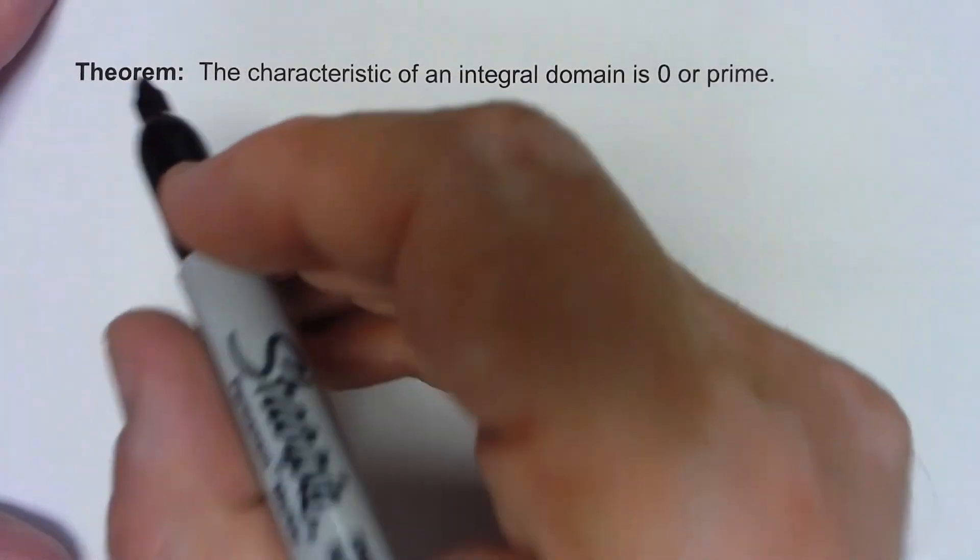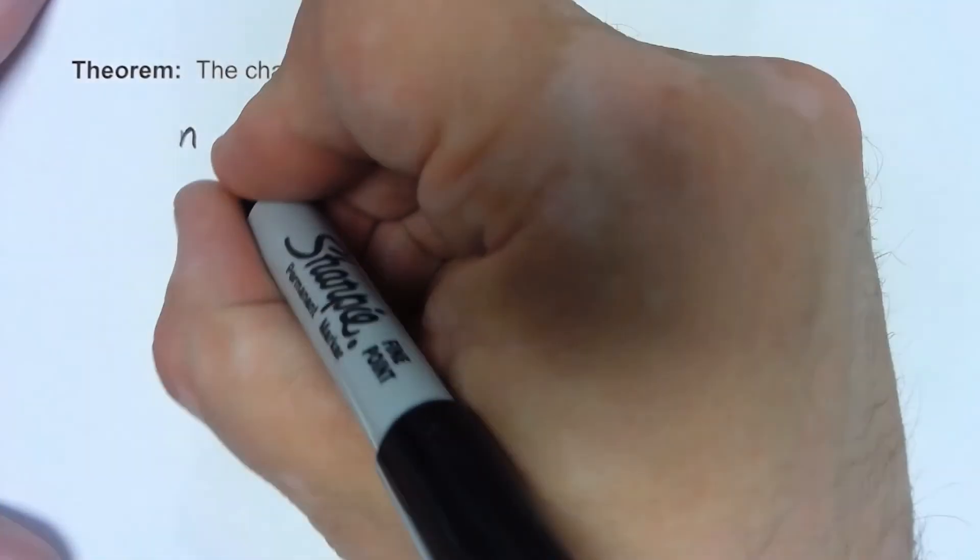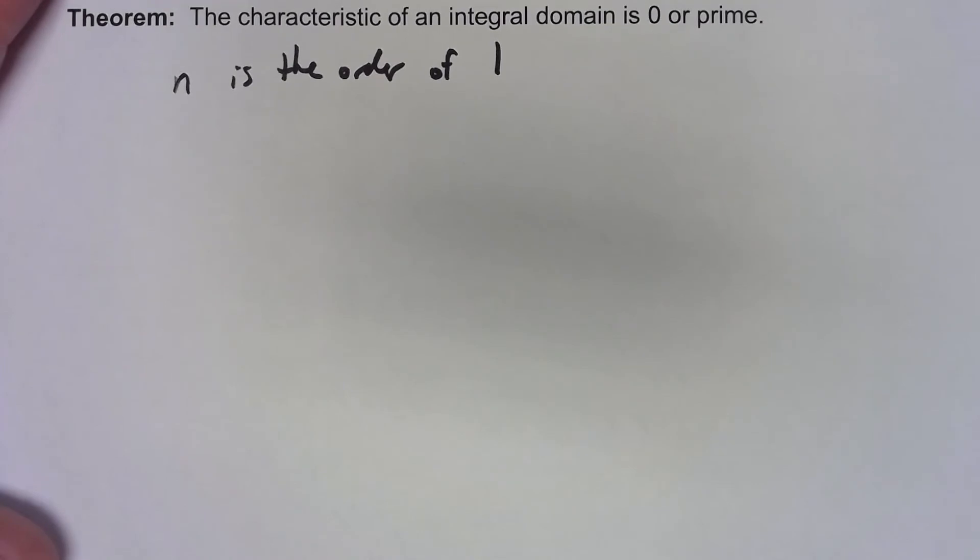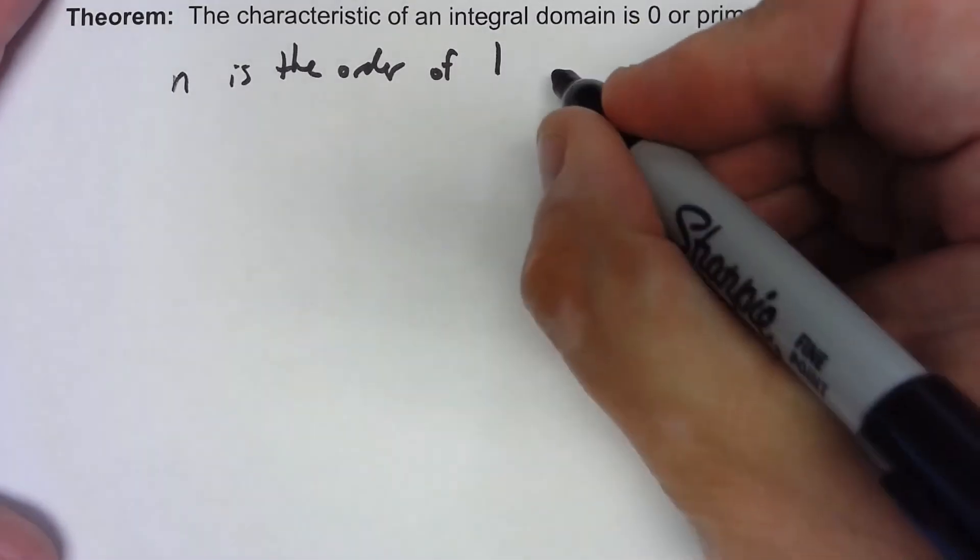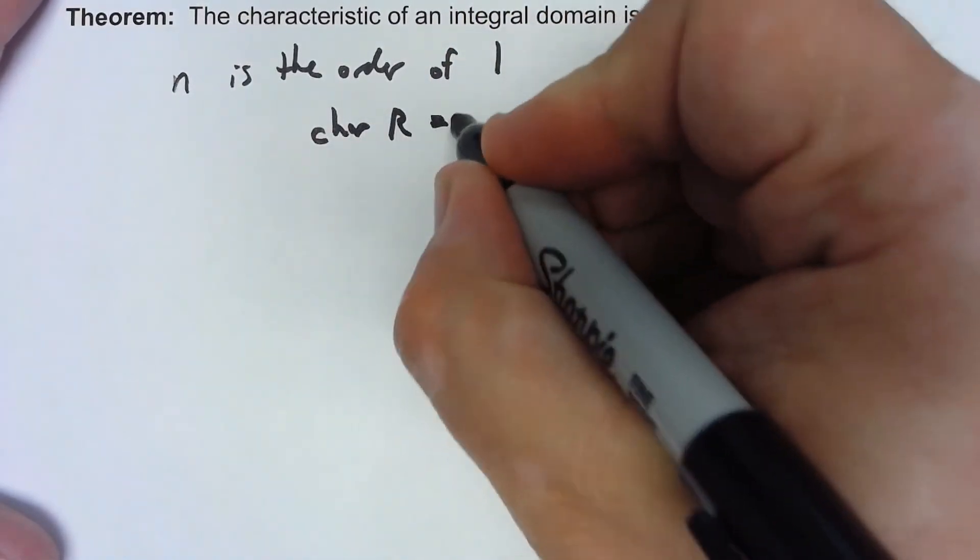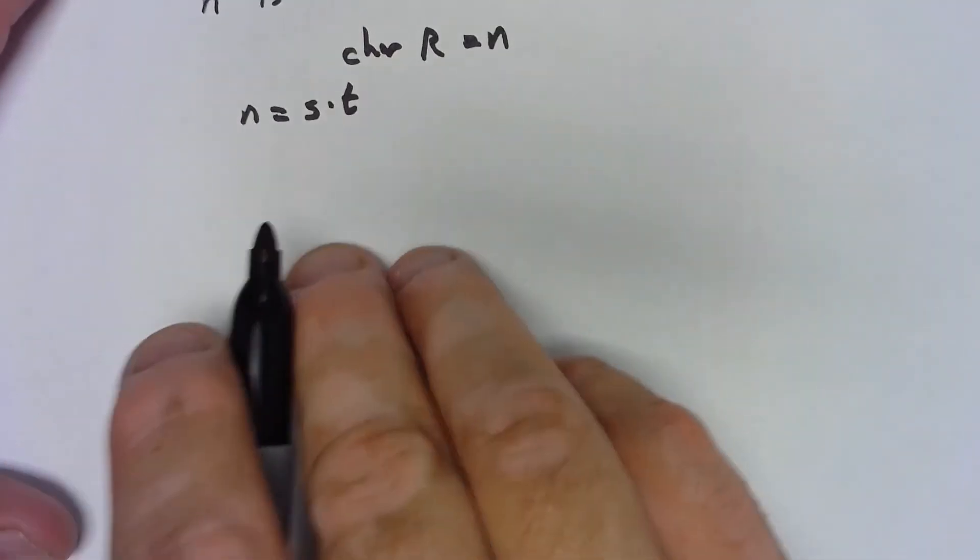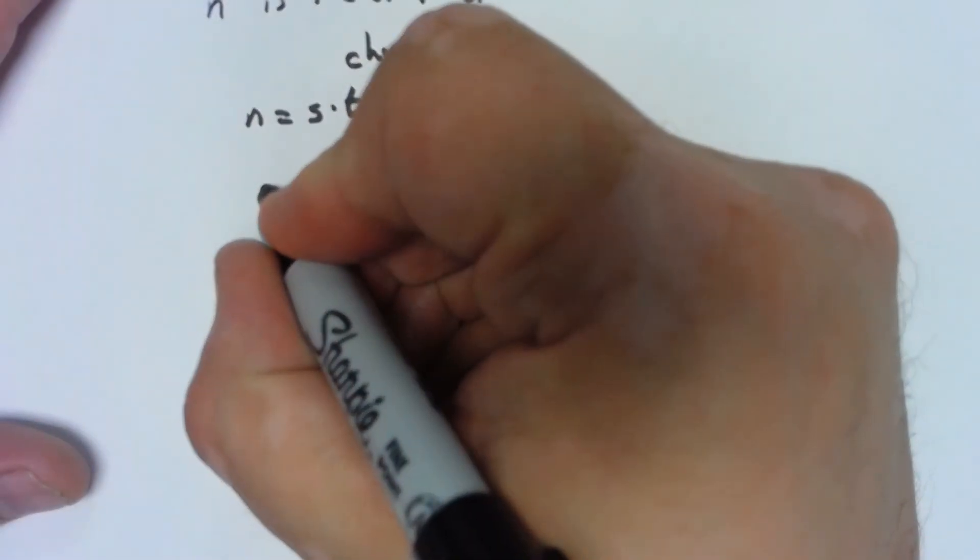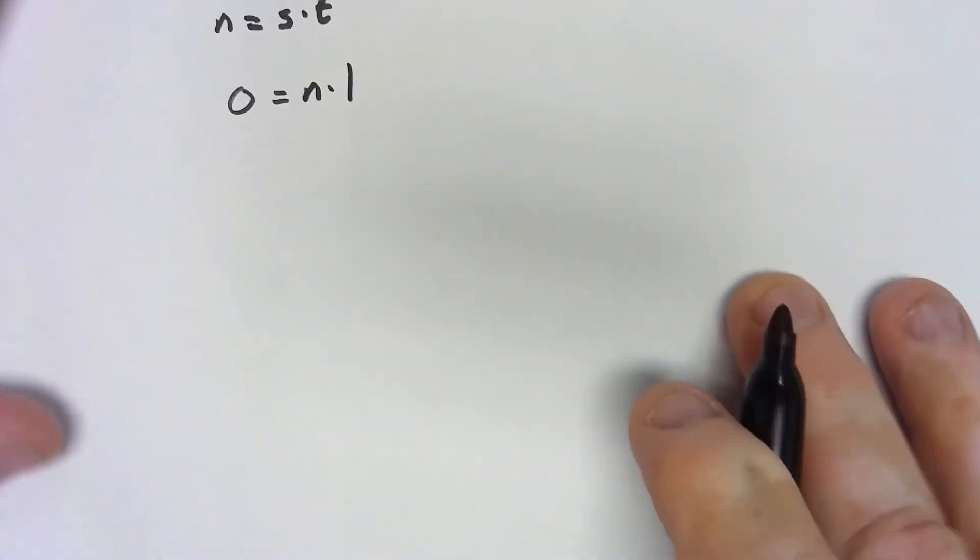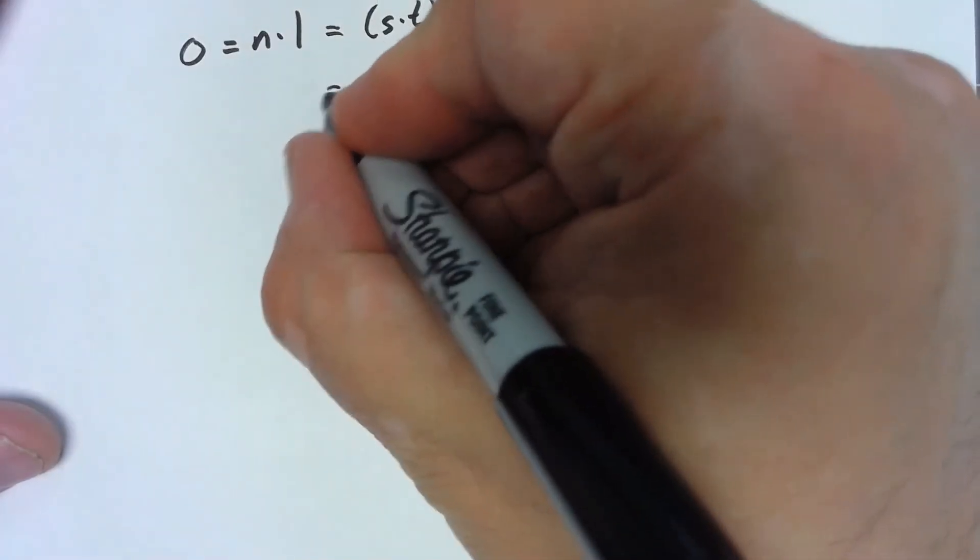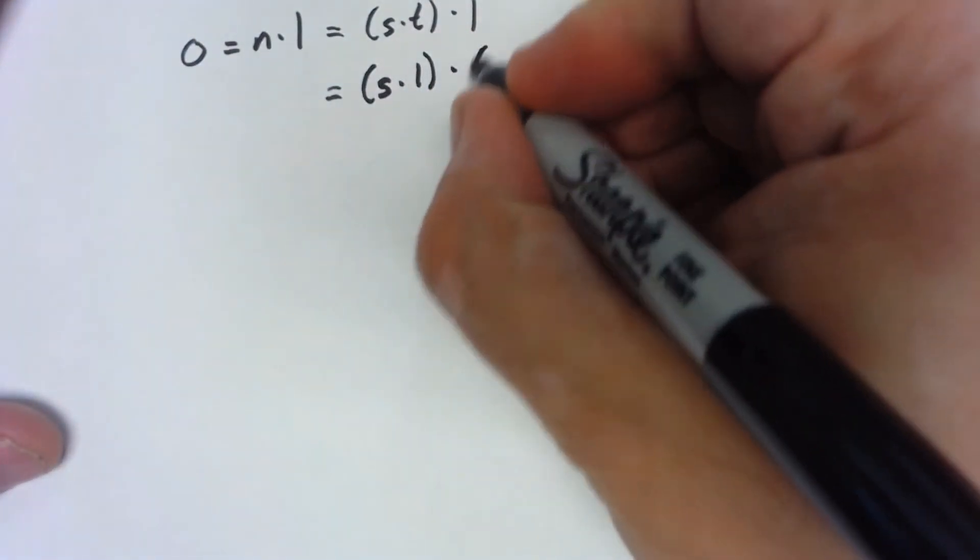So let's consider that n is the order of 1. Because of the previous theorem, that's also going to be the characteristic of R. And let's suppose that n is equal to the product of two other numbers, s times t. Then we know, since n is the order of 1, we know that 0 has to equal n times 1, which means that we've got s times t times 1.